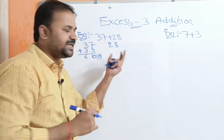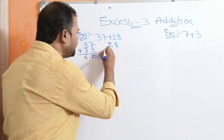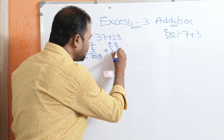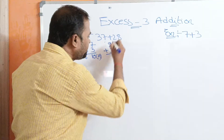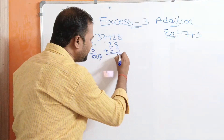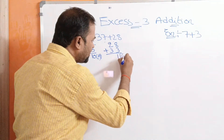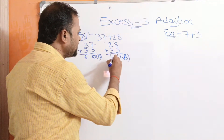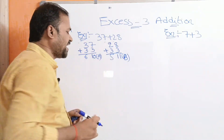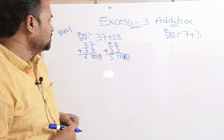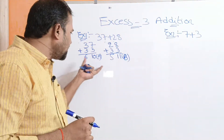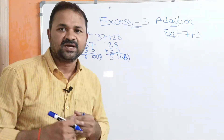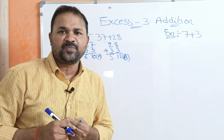The second number is 28. We add 3 to each digit: 8 plus 3 means 11, which is B in hex notation, and 2 plus 3 means 5. So now these are the XS3 representations of 37 and 28.